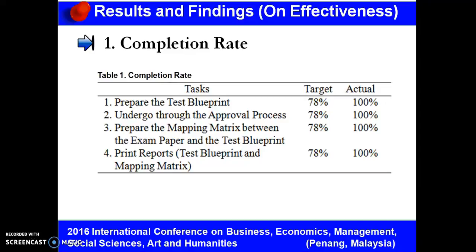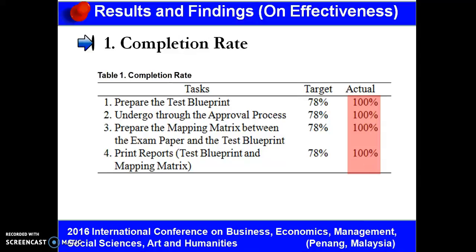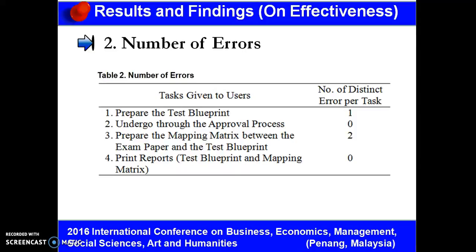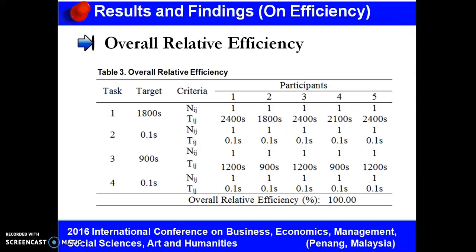The results and findings on effectiveness show that throughout the website walkthrough, all 5 participants successfully completed all 4 required tasks. The set target is 78% as the threshold completion rate. Therefore, the 100% completion rate fits the aim of teachers, as they are accountable to student learning achievement, implying a high confidence level between 75% to 100%. As revealed in Table 2, participants encountered one distinct error in Task 1 and two distinct errors in Task 3, while half of the tasks yielded no errors. Therefore, the web-based system is simple and intuitive.